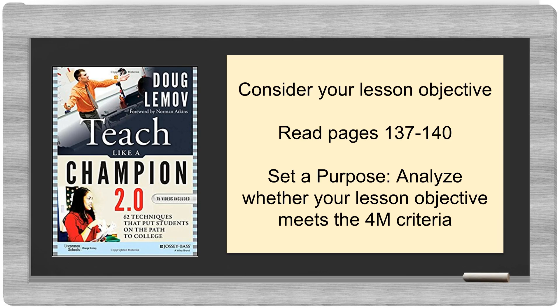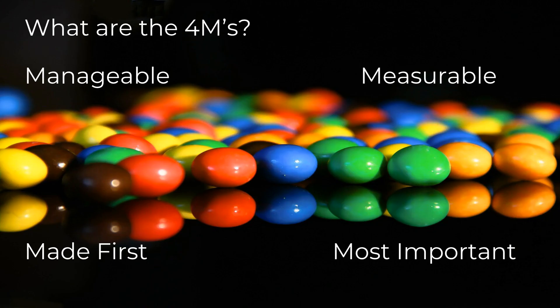Now that you've drafted your lesson objective, it's time to take a closer look and analyze how it measures up. Doug Lemov's Teach Like a Champion 2.0 is full of great techniques. One of them — the 4M objective writing technique — helps teachers make sure their lesson objectives fit certain criteria. Consider your lesson objective, then read pages 137 to 140. As you read, analyze whether your lesson objective meets the 4M criteria. Following the reading, I hope you're able to analyze whether your objective met the 4M criteria of being manageable, measurable, made first, and most important. Don't be afraid to go back and make changes to your lesson objective to make sure it adheres to the technique.